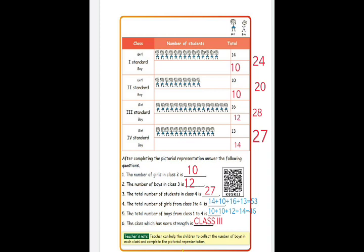After completing pictorial representation, answer the following questions. First question: the number of girls in class 2. Look at the table for class 2 girls — the answer is 10. Second question: number of boys in class 3. Look at the class 3 table for boys alone — the answer is 12.